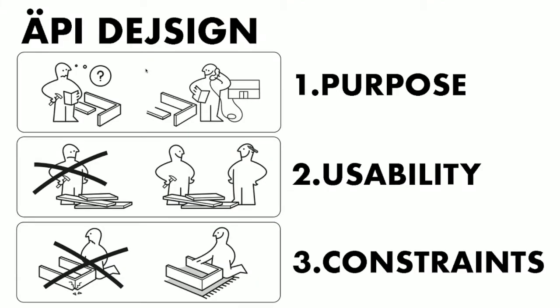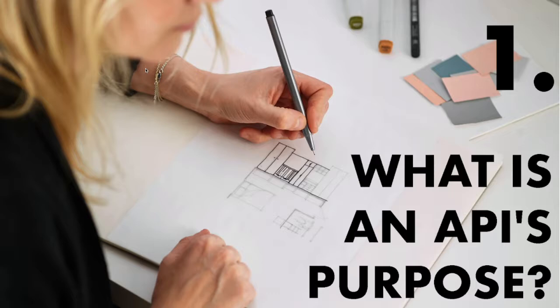In this session I would like to show how the design of everyday objects can help us to design APIs — to help us think about their purpose, their usability, and how their design can be constrained. The very first mission of API designers is to ensure that the purpose of the API they are designing is actually the right one.